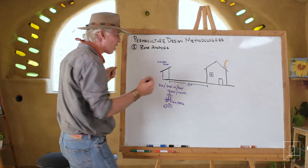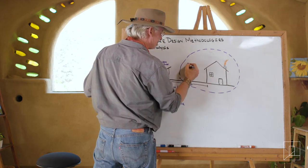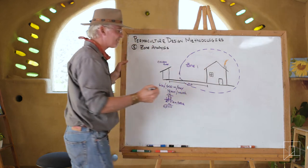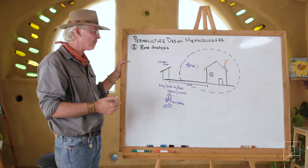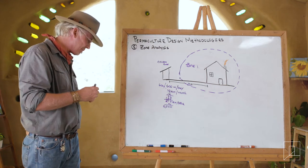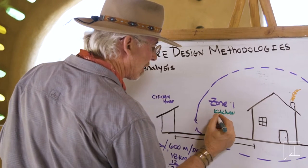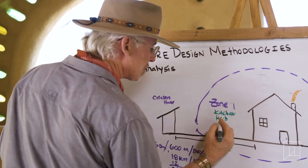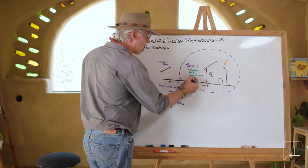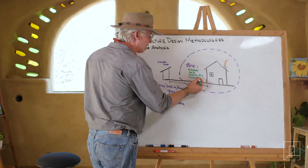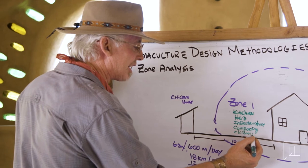Basically around your home, we do what we call zone one. Those are all the things that you would place near your home that you visit regularly — things you're doing daily. So it might be kitchen gardens, herb gardens, most of your infrastructure. You might have your garage, your composting, your children's play areas — all the things that you would do on a daily basis.